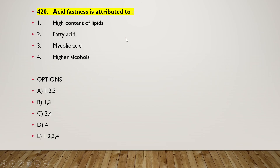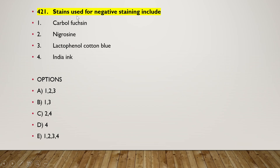Next question: acid fastness is attributed to high content of — (1) lipids, (2) fatty acid, (3) mycolic acid, (4) higher alcohols. The right answer is option E — one, two, three, four — all options are correct.